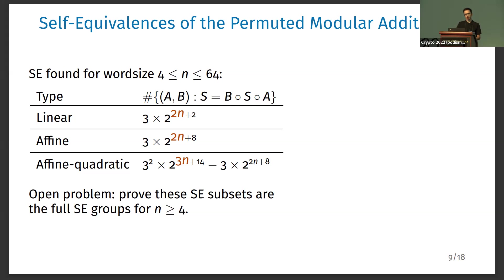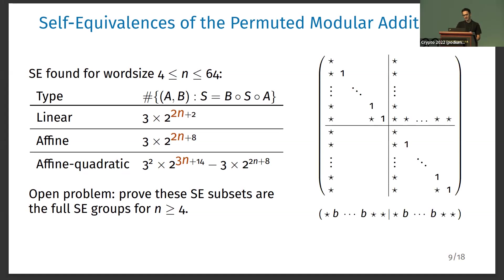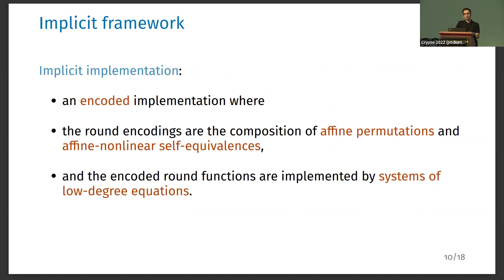We did not prove that these are all the self-equivalences, so we leave this as an open problem. Now we have a non-linear layer with many and large self-equivalences, so we are ready to build a white box implementation. However, there is a problem: these self-equivalences are very structured and very sparse, which could be a problem when building a self-equivalence implementation. In a later work, we built a white box implementation using these self-equivalences, but we broke it because of this structure. So we were back to square one.